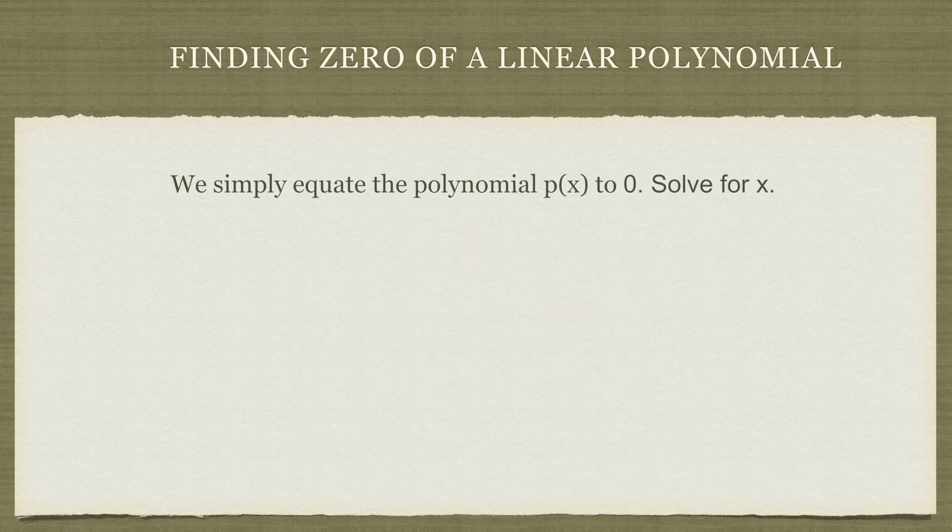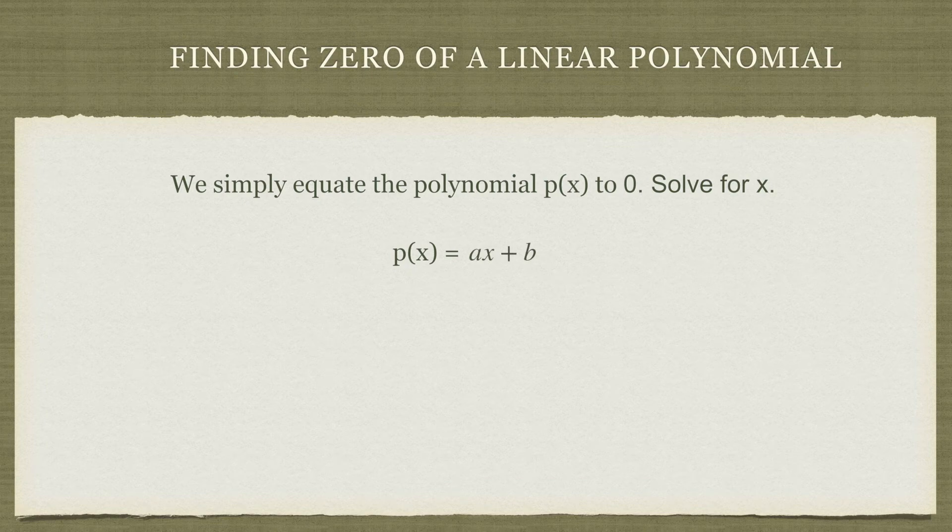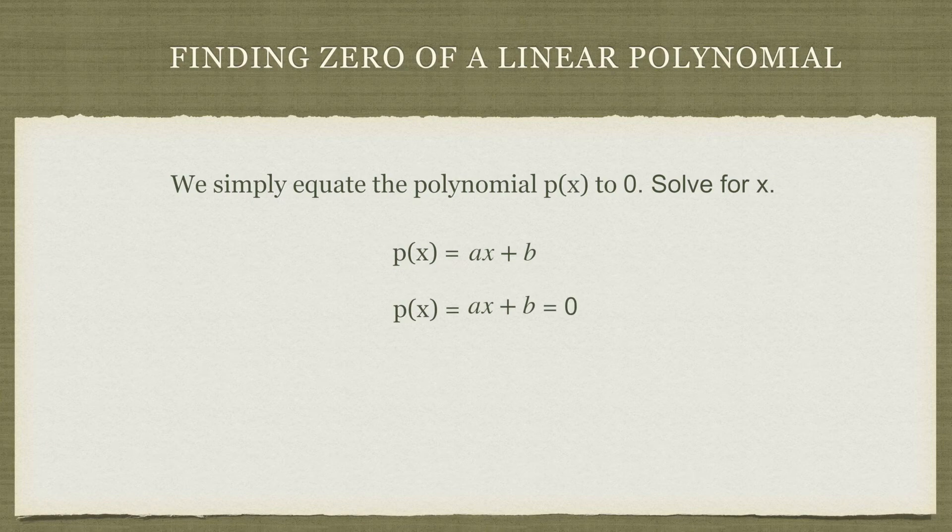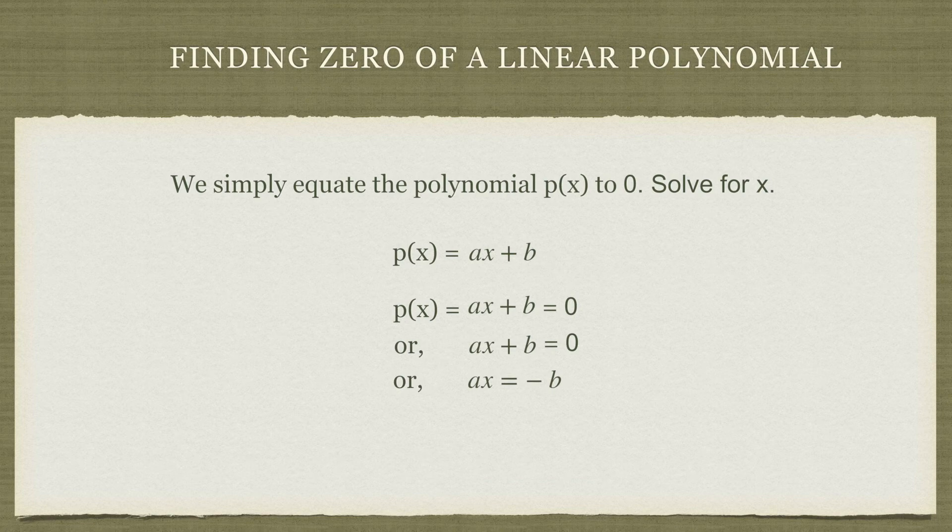Let's try to generalize this for a linear polynomial. The standard way of writing a linear polynomial is p(x) equals ax plus b, where a and b are real numbers. Let's equate ax plus b to zero. We get ax plus b equals zero, or ax equals minus b, or x equals minus b by a.